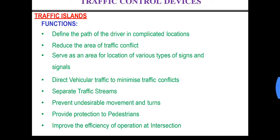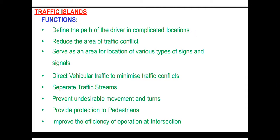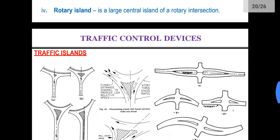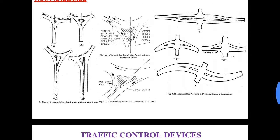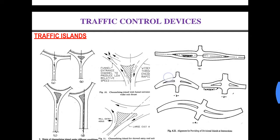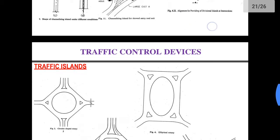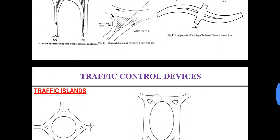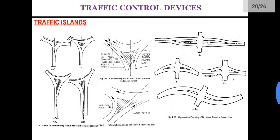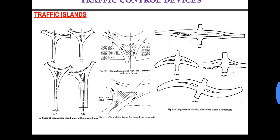Let us have a look at the functions of traffic islands. They define the path of the driver in complicated locations. In locations or intersections where there are more number of roads meeting, a driver might get confused while he wants to travel to a particular direction. There, what we do is we try to provide directional islands or channelizing islands.